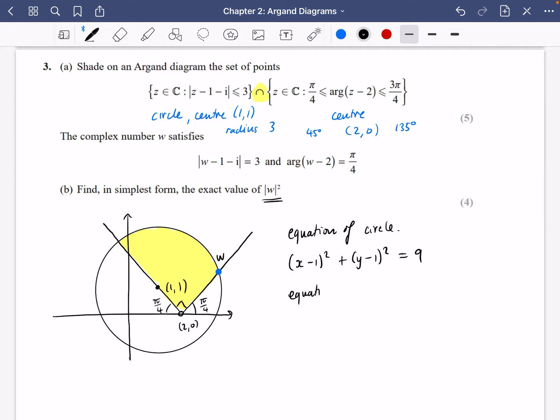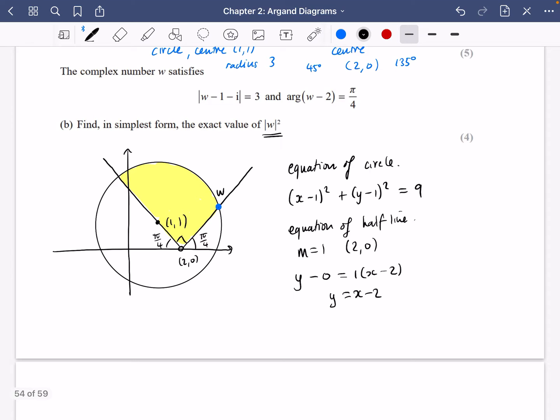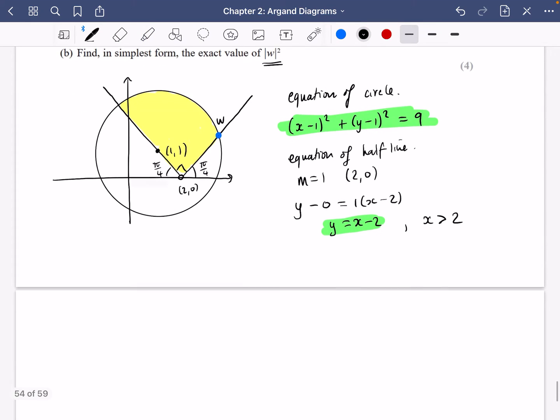And now we're going to think about the equation of the half line. Now for the equation of the half line, we can tell that it's going to have a gradient of 1. And we can see that it's going through the point 2, 0. So pretty simply, it's just going to be y minus 0 equals m brackets x minus 2. In other words, y is equal to x minus 2. Now if y is equal to x minus 2, we must just note to ourselves, this is only going to be true for values of x, which are greater than 2, because the line is only starting where x is equal to 2. So what I'm now going to do is I'm going to solve y equals x minus 2 and this equation. I'm going to solve them simultaneously. And that should give me where w is.